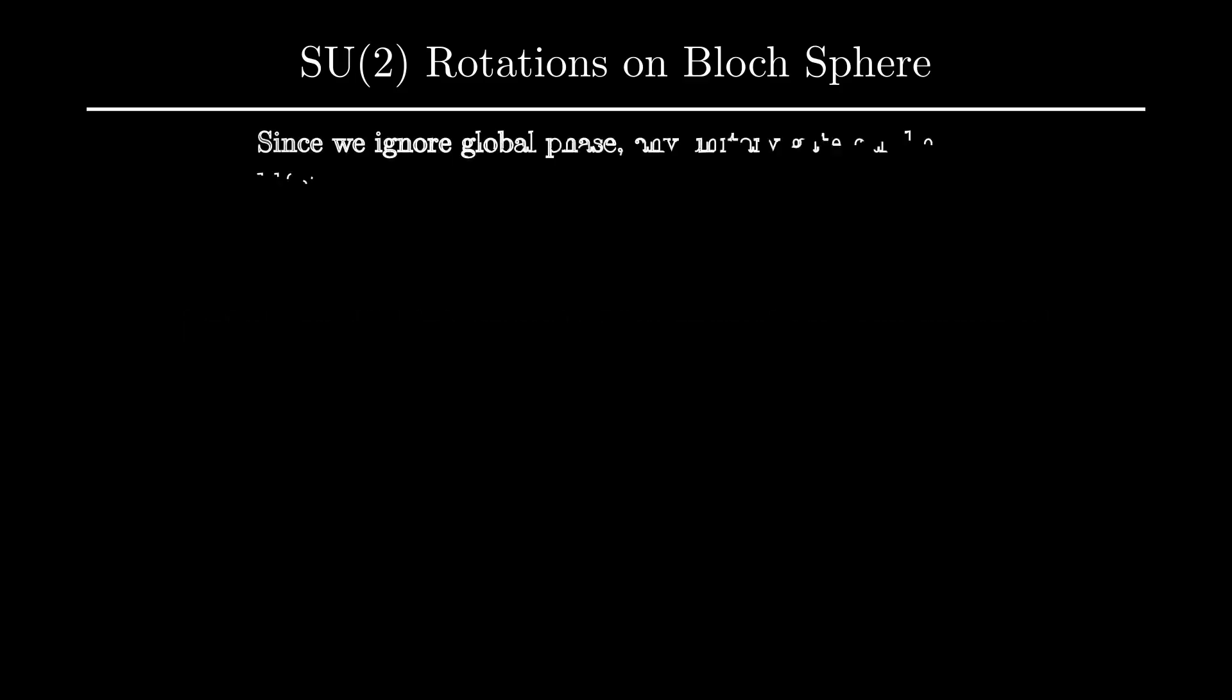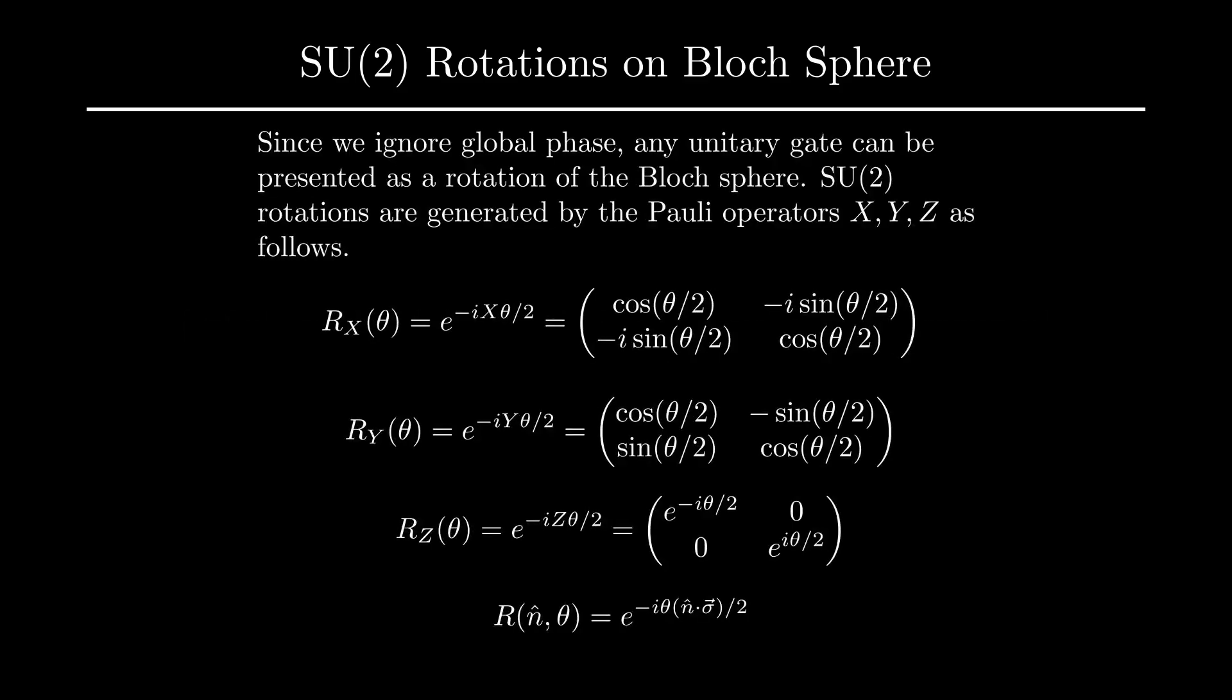However, since global phase does not change a given state, we can always multiply these operators by an appropriate phase factor to get an operator with determinant 1 that is in SU(2).